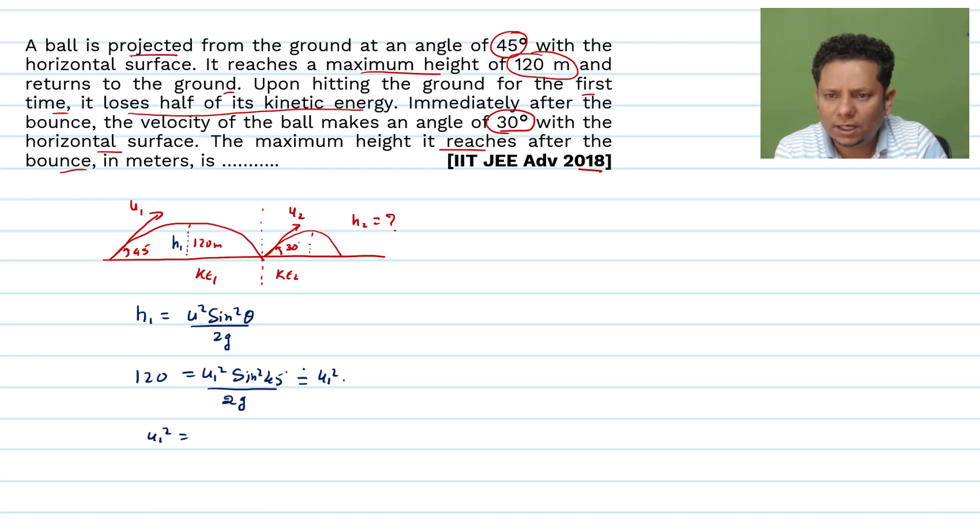u1 squared multiplied by sine squared 45, sine 45 is 1 by root 2 squared, so this is 4g multiplied by 120. This is how u1 squared is.